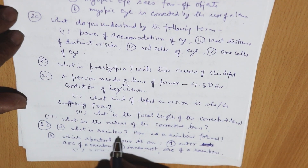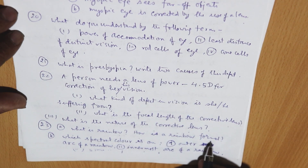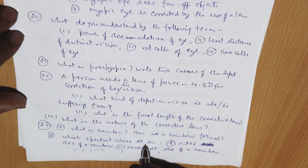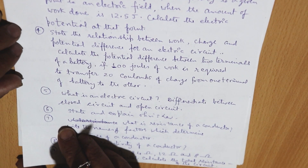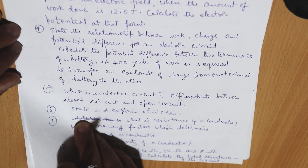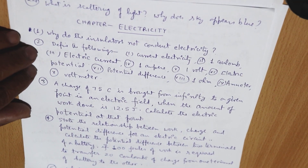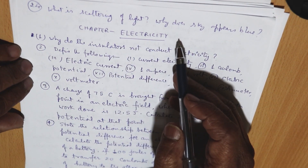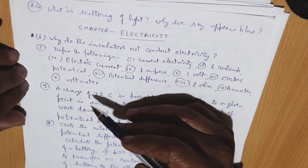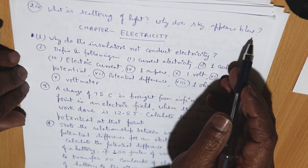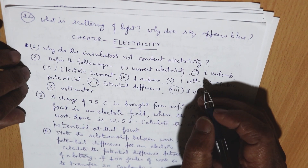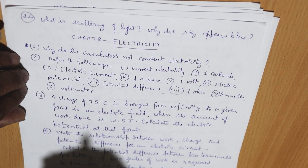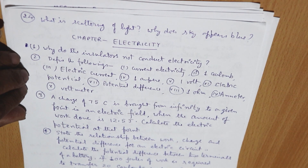Next question: what is a rainbow and how is a rainbow formed? Which spectral colour is on the outer arc and which is on the inner arc of a rainbow? Also, what is scattering of light and why does the sky appear blue? Scattering means when rays of light fall on a particle, the light is reflected and scattered.